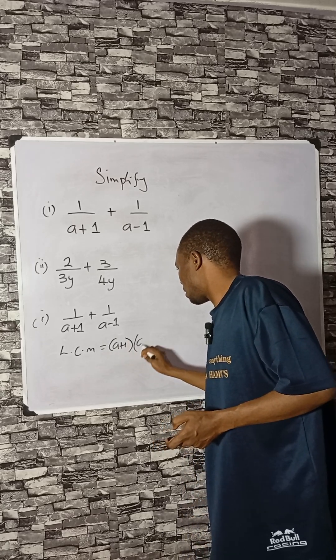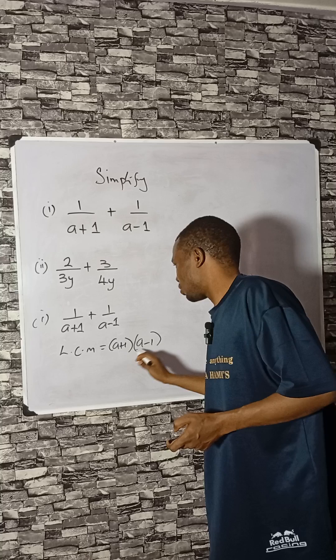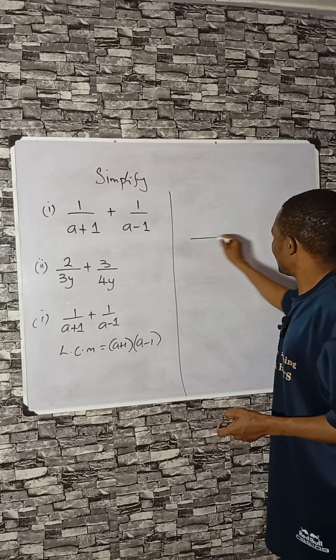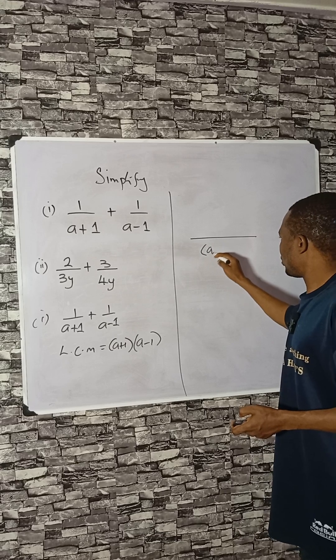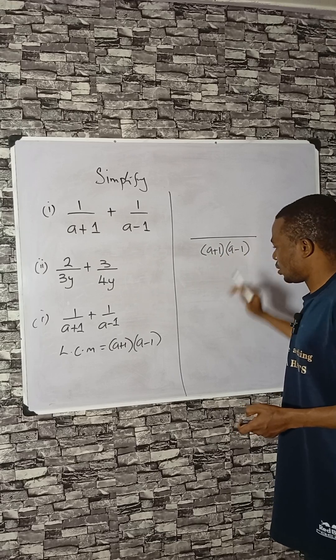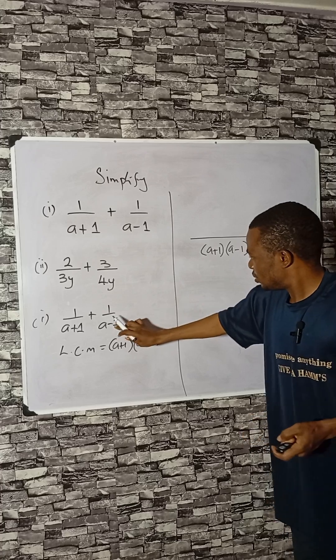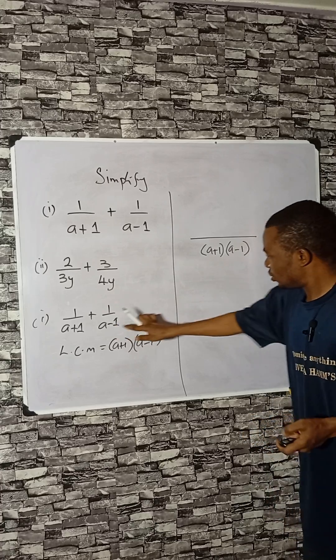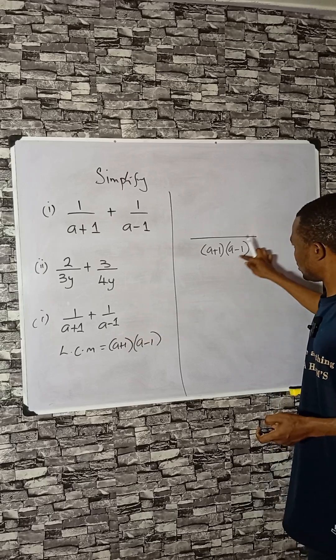So you draw a line as usual, write the LCM below: (a+1) times (a-1). Divide this, multiply the whole of this by the LCM. You see, this will cancel this, and what you will be left with is this one, that will be (a+1) times 1.